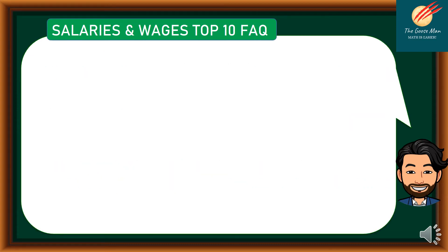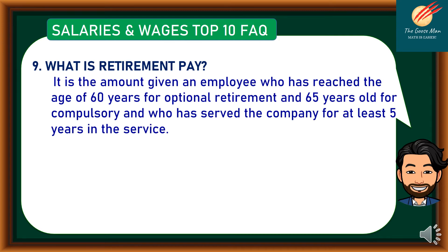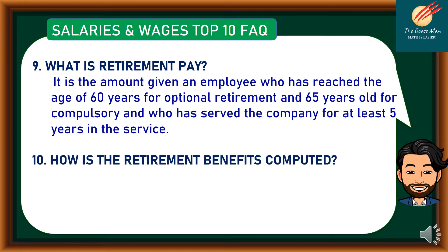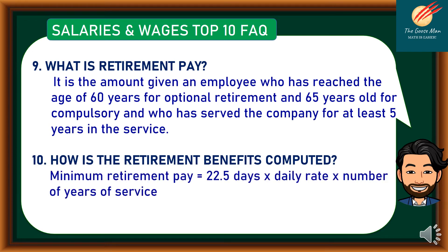Number 9: what is retirement pay? It is the amount given to an employee who has reached the age of 60 years for optional retirement and 65 years old for compulsory retirement, and who has served the company for at least 5 years. Number 10: how is retirement benefit computed? The minimum retirement pay is equal to 22.5 days multiplied by the daily rate multiplied by the number of years of service.